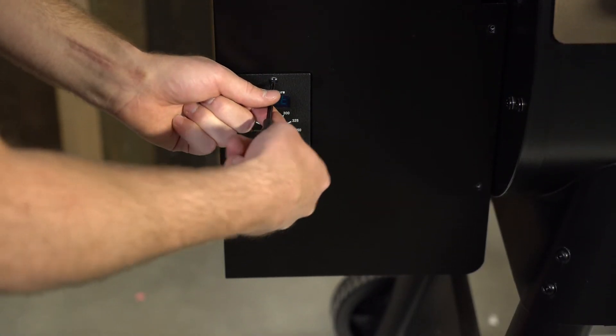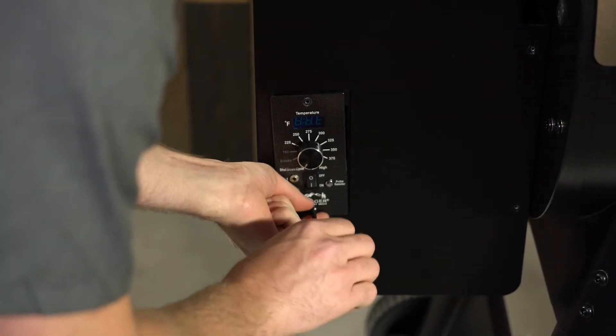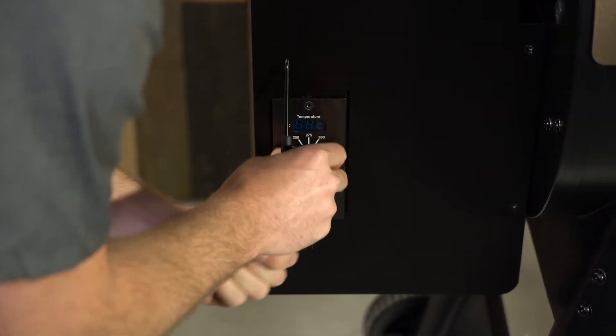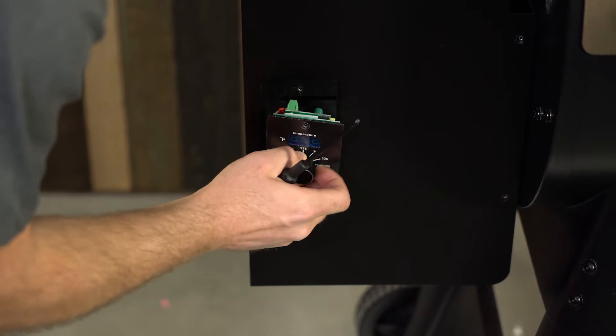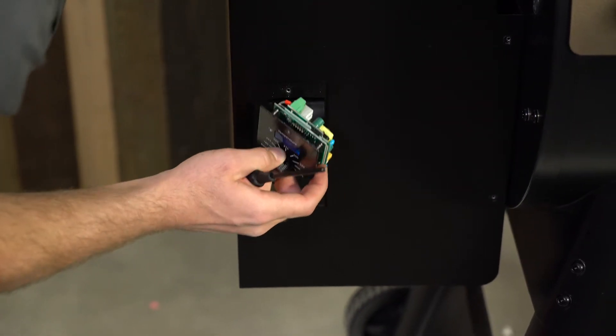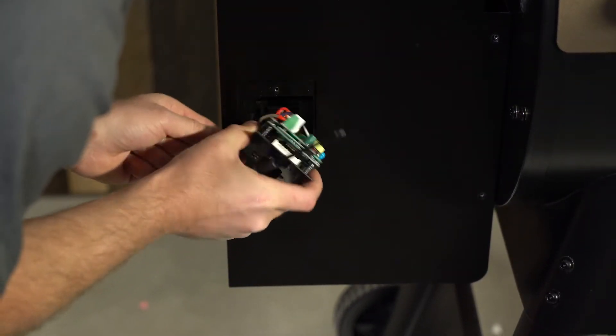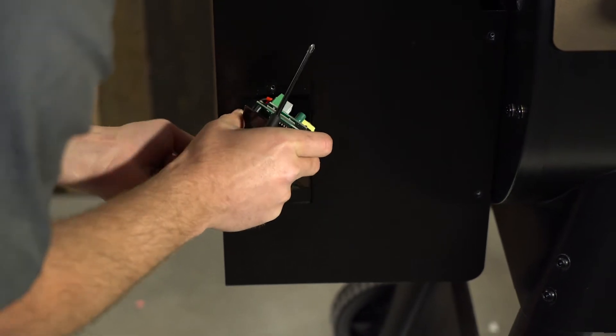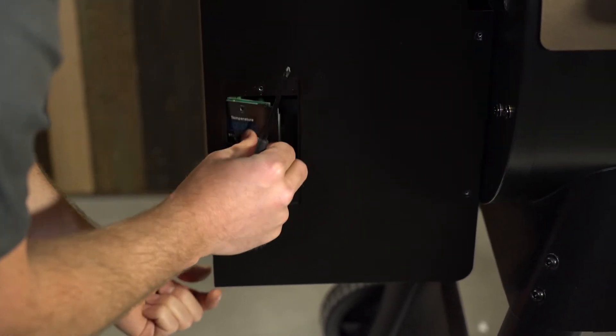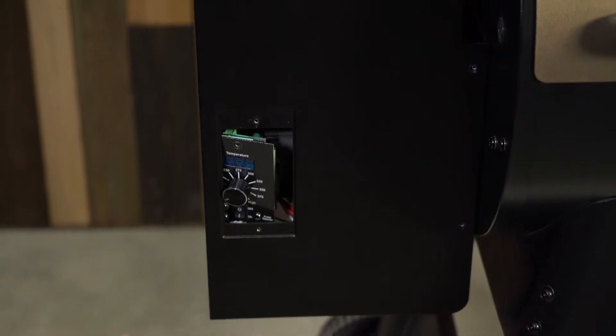All right, so we're going to take the controller and dismount it from the hopper first. You want to put the controller back through the mounting hole. The easiest way to do it is to pull it out of the hopper and then put it through sideways and wiggle it into that mounting hole.